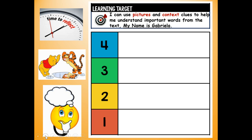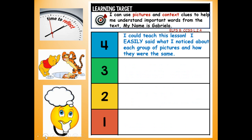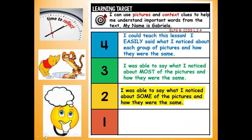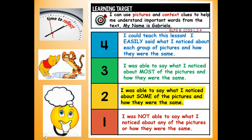At the top of your page, reflect on your learning. Could you give yourself a four? I could teach this lesson — I easily said what I noticed about each group of pictures and how they were the same. Or a three? I was able to say what I noticed about most of the pictures. Or a two? Some of the pictures. Or a one? I was not able to say what I noticed about any of the pictures. Write your reflection — four, three, two, or one. Thank you boys and girls for writing your words, the synonym, and drawing a quick picture or sketch. Have a great day.